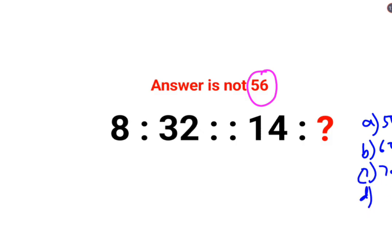So now, out of these, what should be the answer? Obviously this looks so easy, right? 8 multiplied by 4 gets you 32, so here we should also do the same: 14 multiplied by 4.